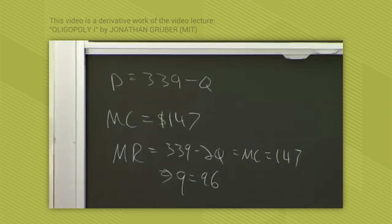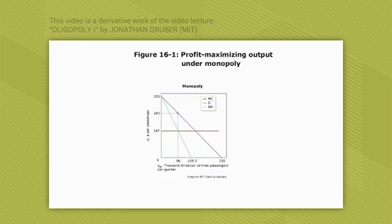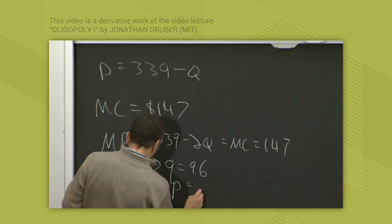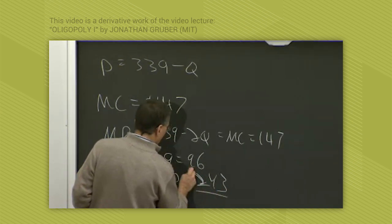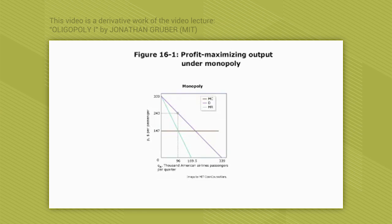If it was a monopolist, it would choose a quantity of 96, and it would choose a price of $243, which we just get off the demand curve. If the quantity is 96, the price is $243, and that's what we see here.